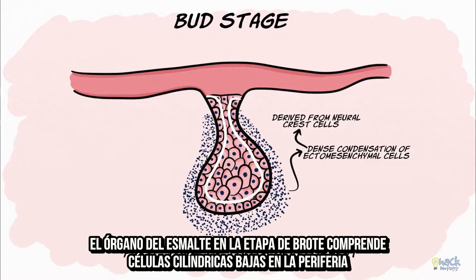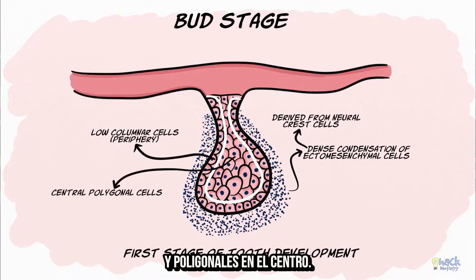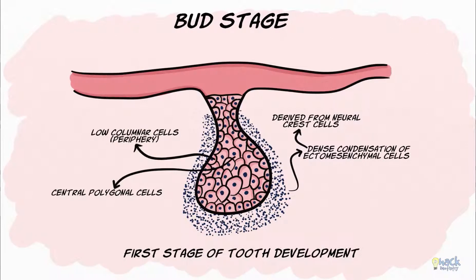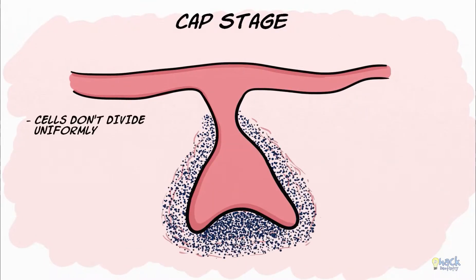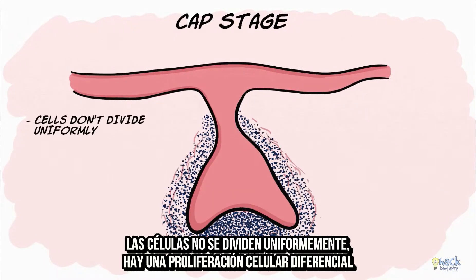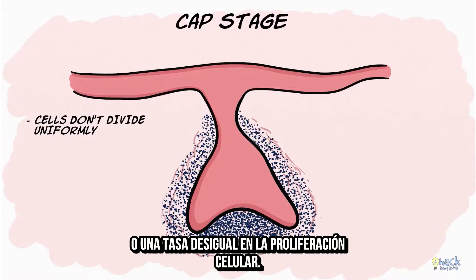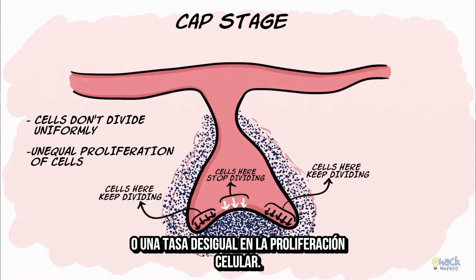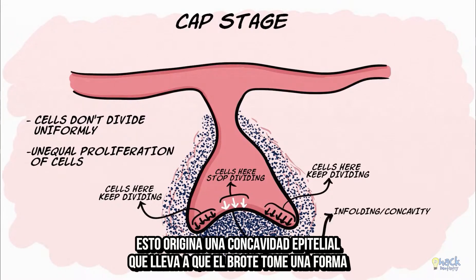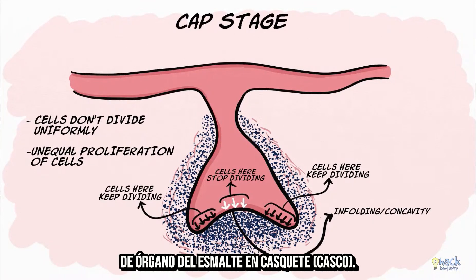The enamel organ in the bud stage comprises low columnar cells peripherally and polygonal cells centrally. Rather than all cells dividing uniformly in the tooth bud, there is differential proliferation — an unequal rate in the proliferation of cells. This leads to a concavity or an enfolding of the epithelium, resulting in the bud-shaped enamel organ becoming cap shaped.